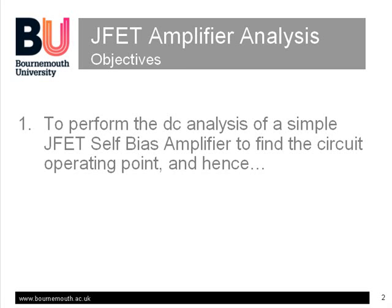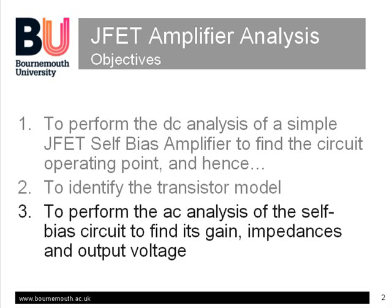The first part covered the DC analysis of the circuit to find the quiescent operating point, and in particular the bias voltage on the gate and the corresponding DC drain current. In part 2, based on the operating point information, we derived the simple linear model of the JFET we can use for hand calculations. And in this final part, we'll use the model to perform an AC analysis of the circuit to find its gain, impedances and output signal level.